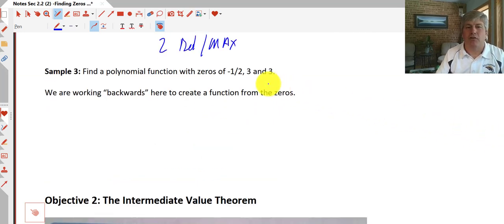Sample three. Find a polynomial function with zeros of negative one half, three, and three. So those are zeros. So we get x equals negative one half, x equals three, and that's a double root. Working backwards, x equals three is really the factor x minus three. And x equals negative one half is the factor x plus one half.